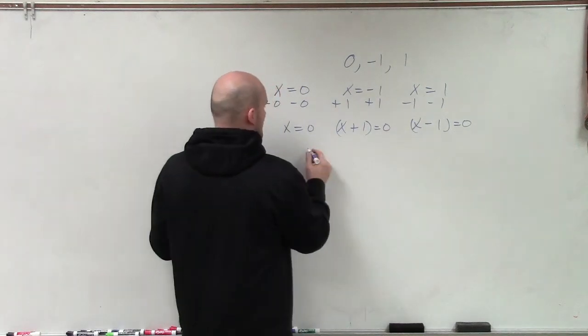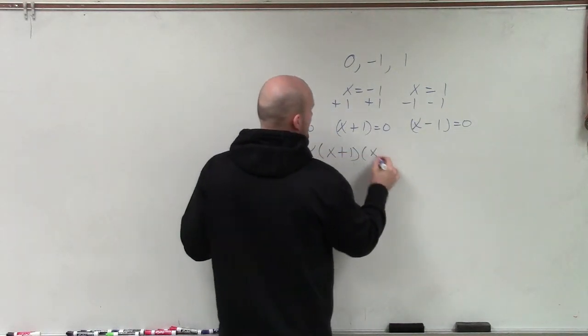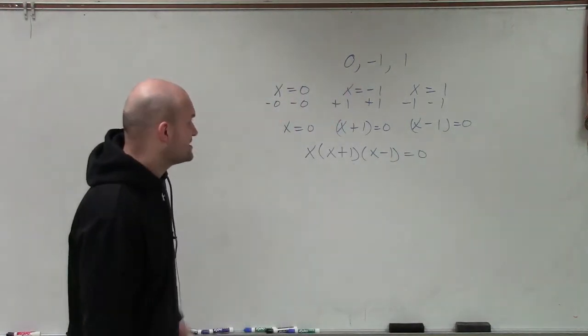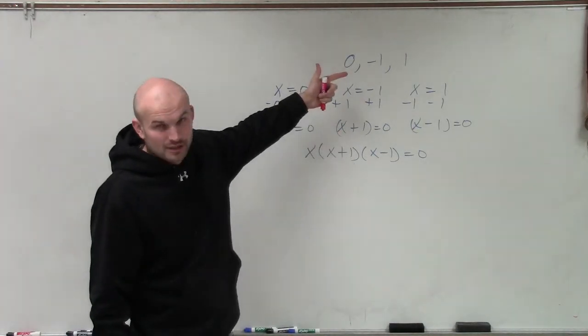And now, since I have these all equal to 0, I can now say that, well, what if I rewrote this kind of using the zero product property backwards? So if I had x times x plus 1 times x minus 1 equals 0, that's how we would have got to there if we were trying to determine the zeros.